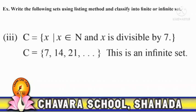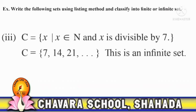Third: C is the set of all x such that x belongs to natural numbers and x is divisible by 7. C = {7, 14, 21, ...}. Since there are infinitely many numbers divisible by 7, this set is an infinite set.